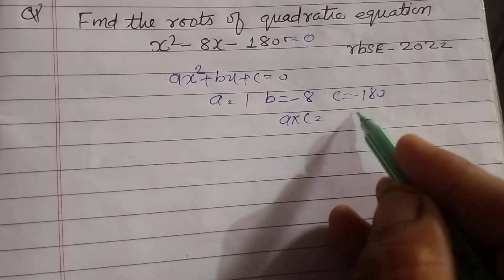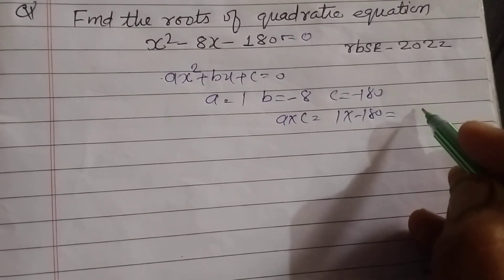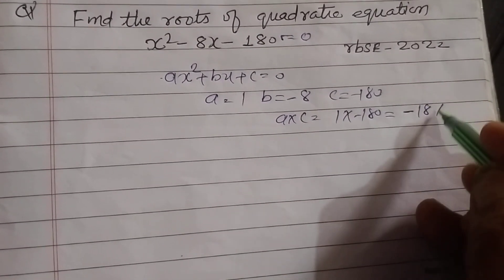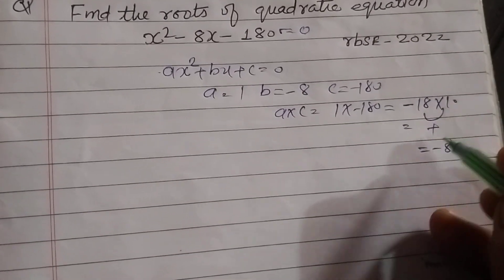So multiplying a and c: 1 × (-180) = -180. This can be written as -18 × 10. When we add these, we get -8.